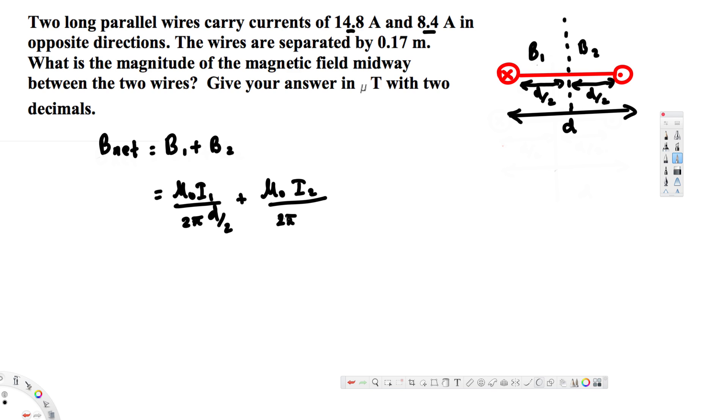Now here we can take mu naught over 2 pi d by 2 common, because these three things are equal for these two. So we can take these three common: mu naught over 2 pi times d by 2 times (I1 plus I2).